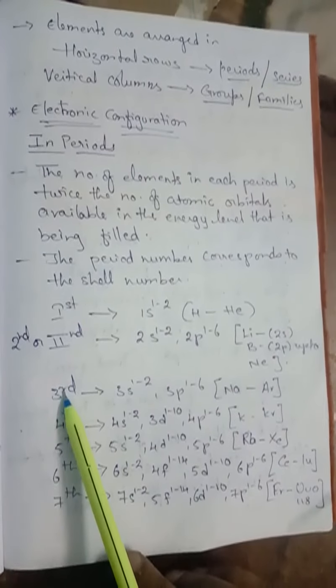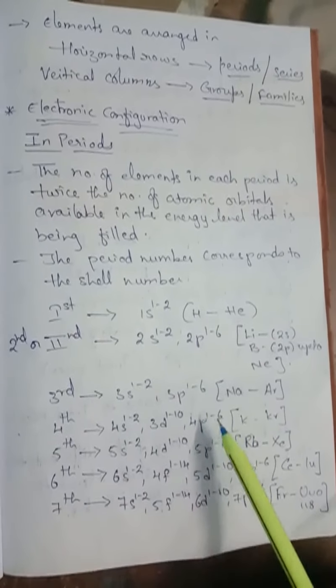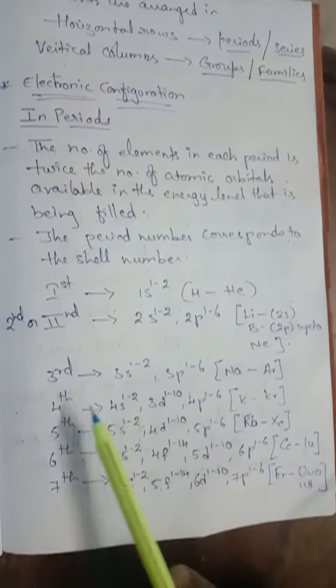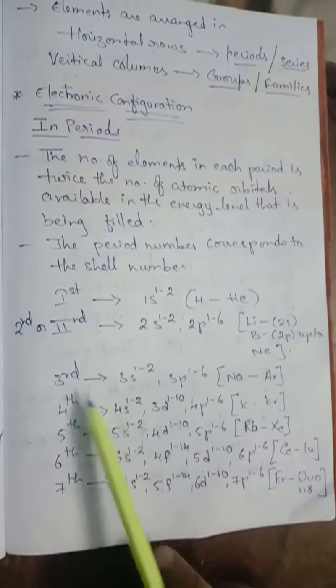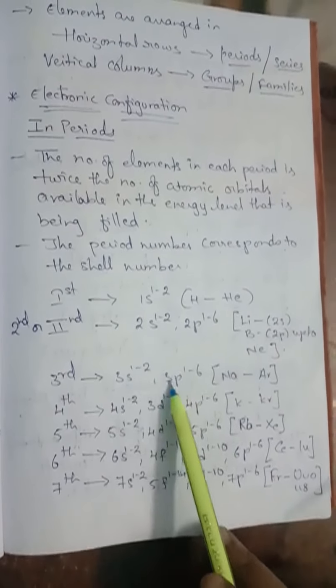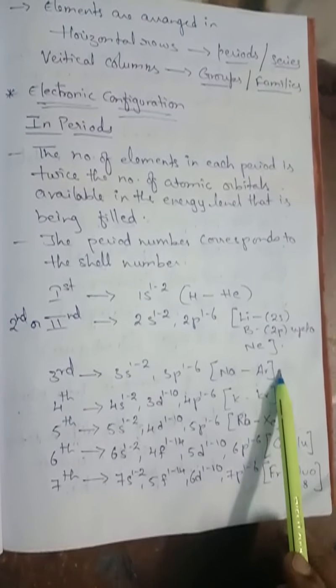The third period starts with sodium, where the differentiating electron enters into the 3s orbital, that is the M shell. Successive filling of 3s and 3p subshells gives rise to the third period of 8 elements from sodium to argon. The electronic configuration is 3s1-2, 3p1-6.